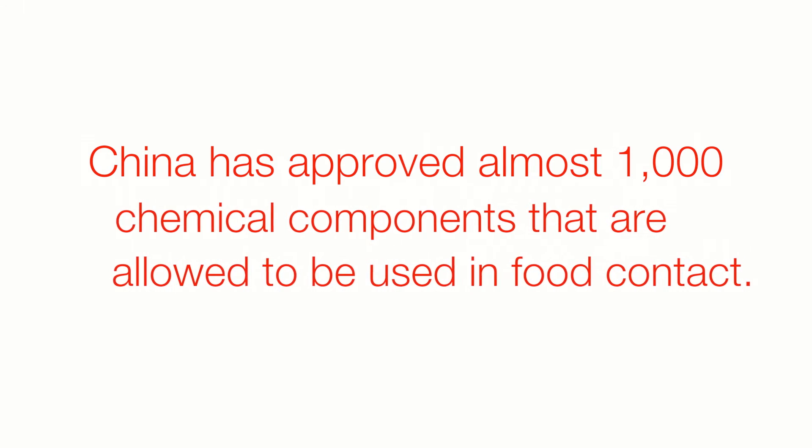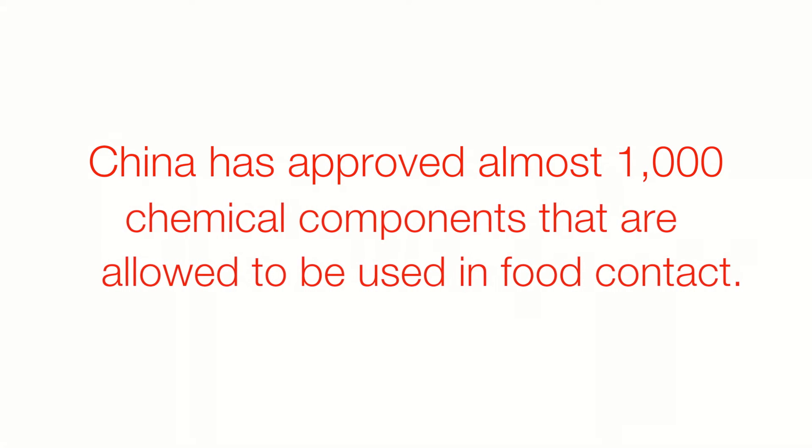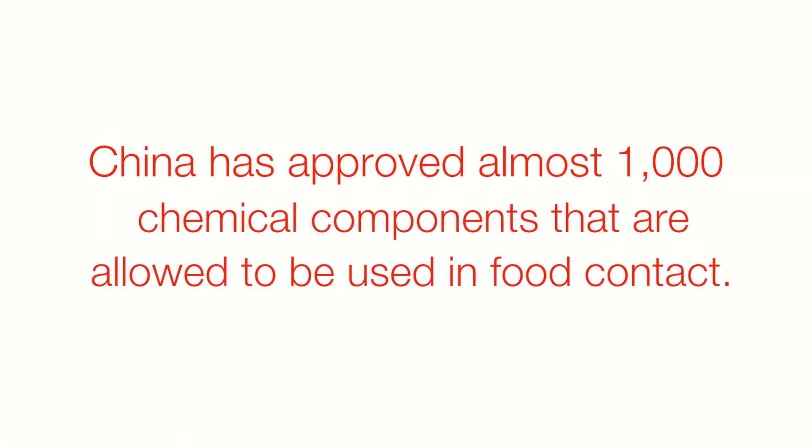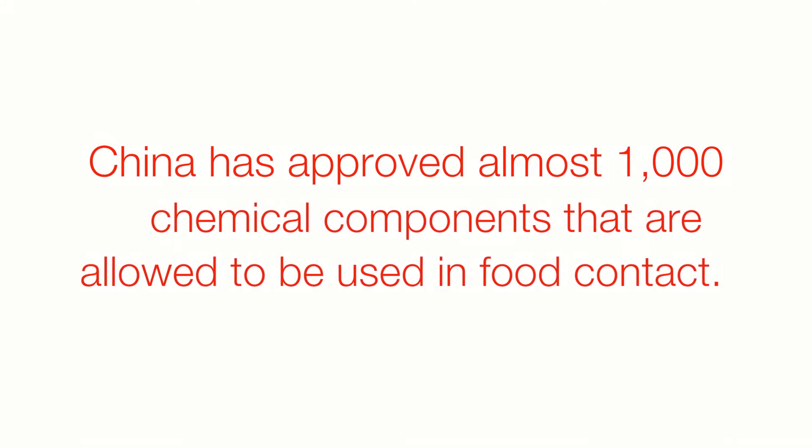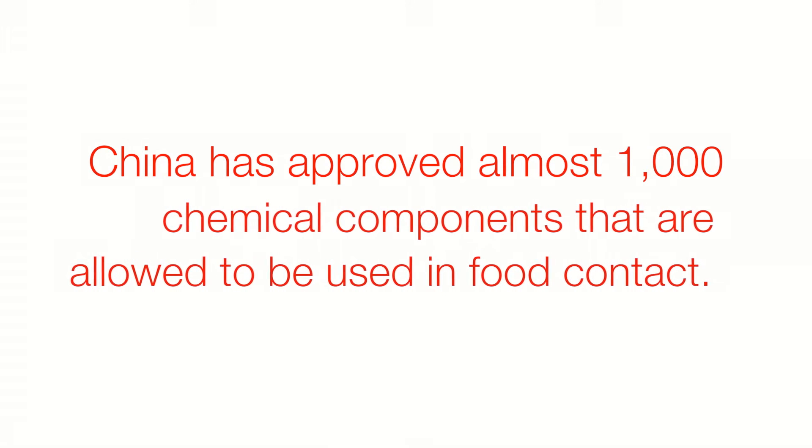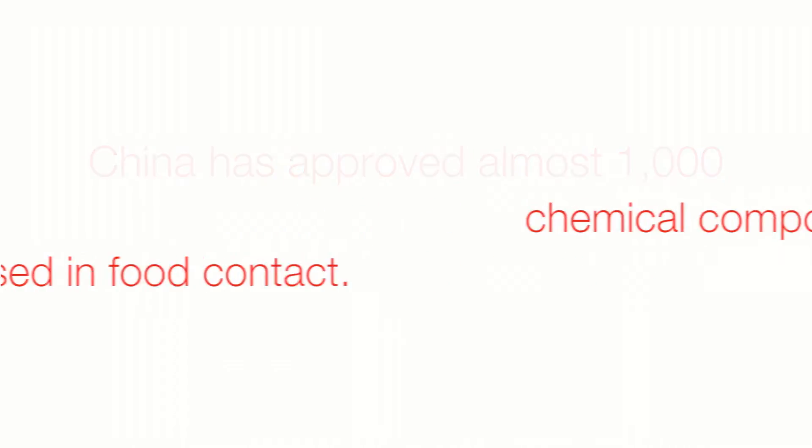In China, unlike the U.S. and the EU, they use a strictly positive list approach. This means that any additives found in food or food packaging materials must be within the scope of GB9685. China also does not distinguish between direct or indirect food contact, making all materials subject to the same standards.